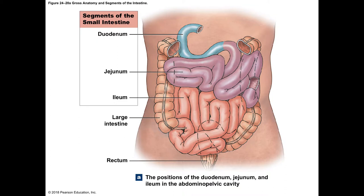After the duodenum, the mixture moves into the jejunum — the second part, about 8 feet long. Now we have a lot of time for things to get absorbed through the intestinal lining and through the blood vessel lining into the blood. We say it's absorbed when it gets into the blood. The jejunum is where most of the nutrients and most of the water are absorbed.